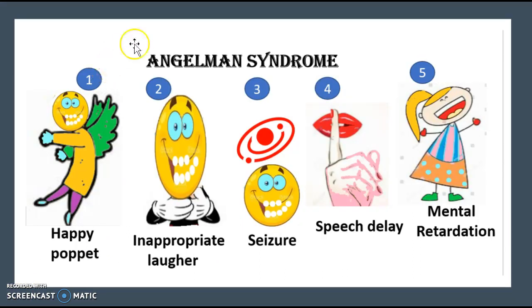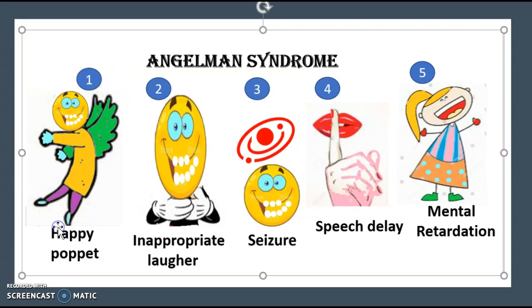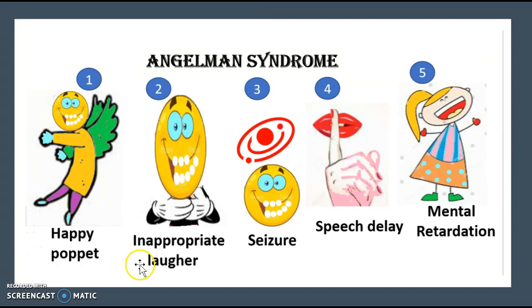When it comes to Angelman syndrome, you're going to notice that it's a lot less physical-based and more about how the patient acts. The first thing you'll notice is that the person is very cheerful and very happy — like a happy puppet. You can also notice inappropriate laughter, where at random instances the patient will start laughing with no reason. You can also find frequent seizures, some speech delay, and lastly there will be some intellectual disability in Angelman syndrome.